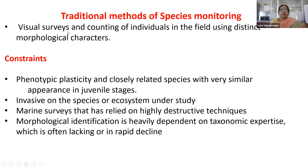Traditional methods of species monitoring involve visual surveys and counting individuals using distinct morphological characters. In a water body, for example, small organisms are collected but some are difficult to identify — especially when young ones of different species look similar. Phenotypic plasticity and closely related species with similar appearance in juvenile stages — like a frog tadpole resembling a fish — make morphological identification difficult even for trained experts.